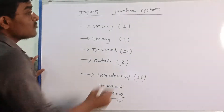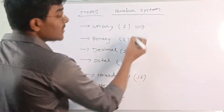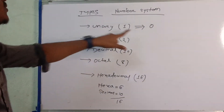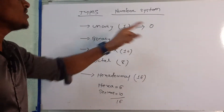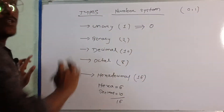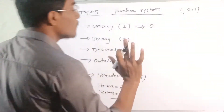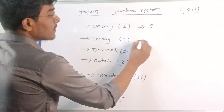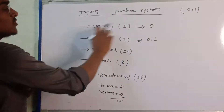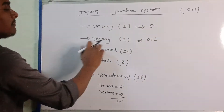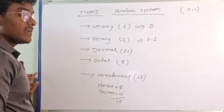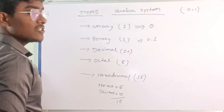Unary — when I consider numbers numerically, I'm going to consider only 0. Because in unary, I'm going to use only 0. In binary, I'm going to consider 0 and 1. So unary is 0 only, then binary extends to use both 0 and 1.